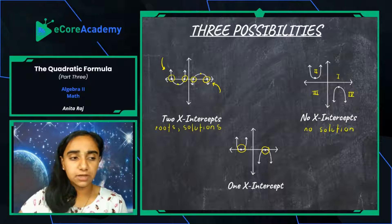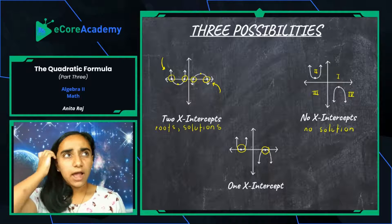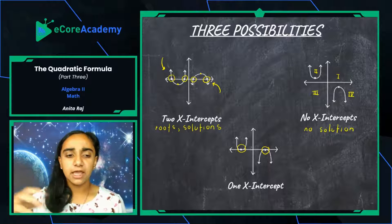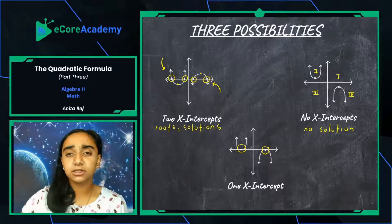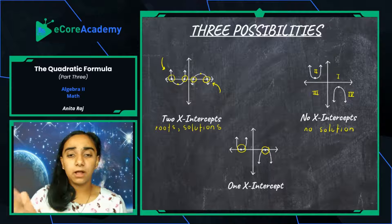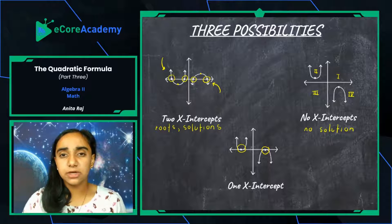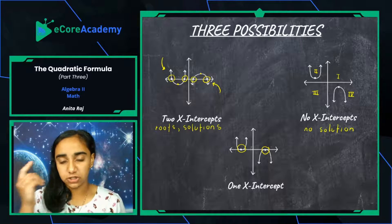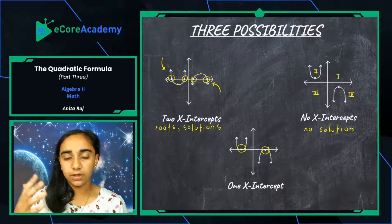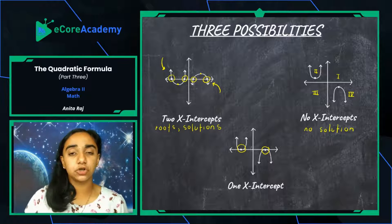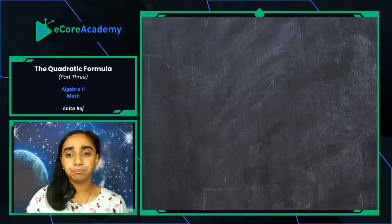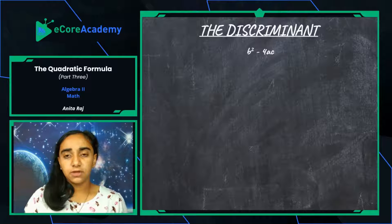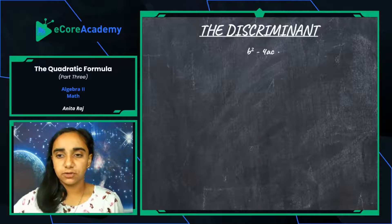You're going to see two x-intercepts, one x-intercept, and no x-intercepts. You might be thinking right now: how exactly will I know, when approaching a quadratic equation, how many solutions I should be looking for? The whole point of the discriminant is to find out how many solutions your quadratic equation has.